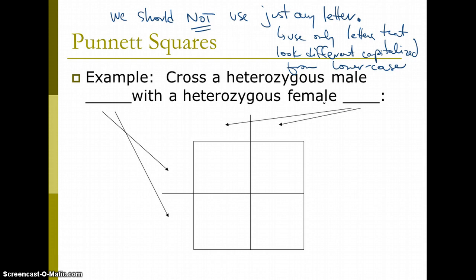So, I'm just going to use the letter B. So, cross a heterozygous male. So, heterozygous means different alleles. It's going to have one dominant and one recessive. Sorry, I'm going to write that in here. So, one dominant and one recessive with a heterozygous female.